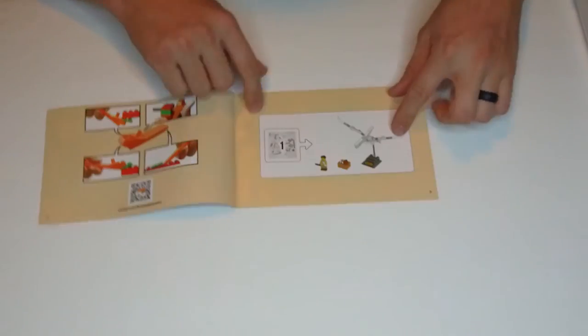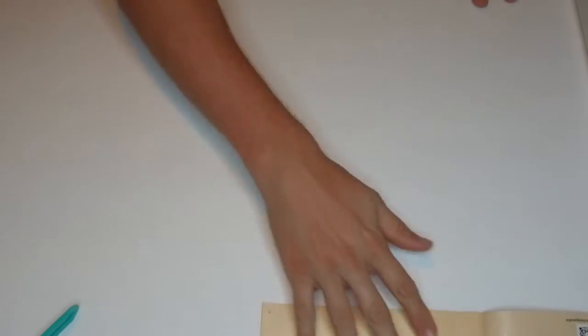All right, easy enough. So bag one, let's start on the Pteranodon. And let's see, first we're going to put together the minifigure. I'll put all these pieces together.